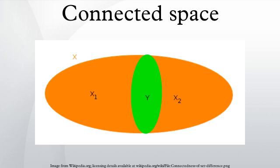For a topological space X, the following conditions are equivalent: X is connected; X cannot be divided into two disjoint non-empty closed sets; the only subsets of X which are both open and closed are X and the empty set; the only subsets of X with empty boundary are X and the empty set; X cannot be written as the union of two non-empty separated sets.